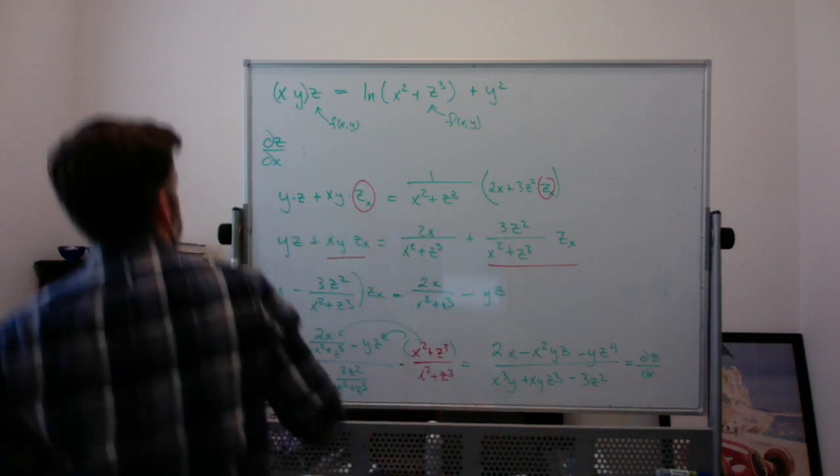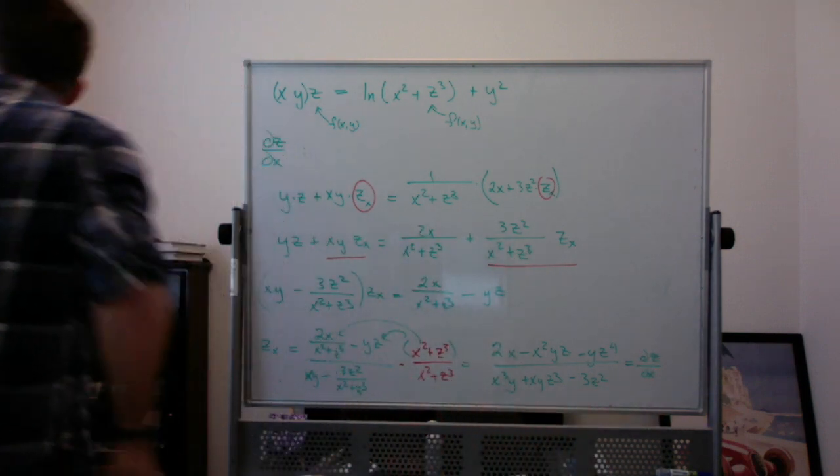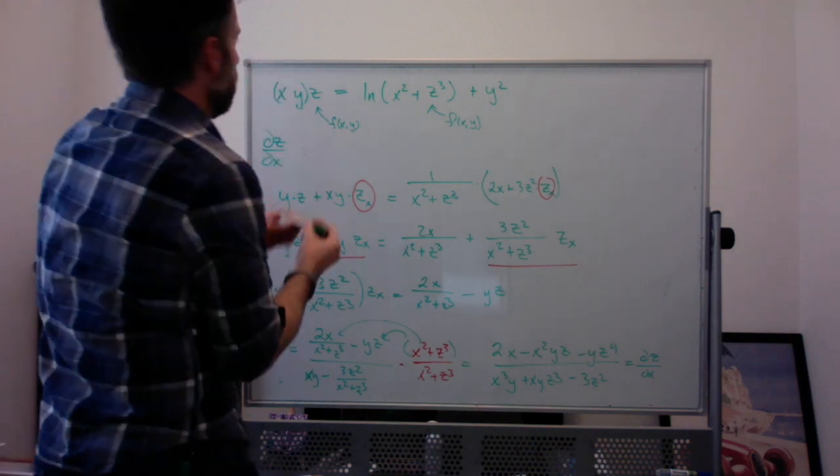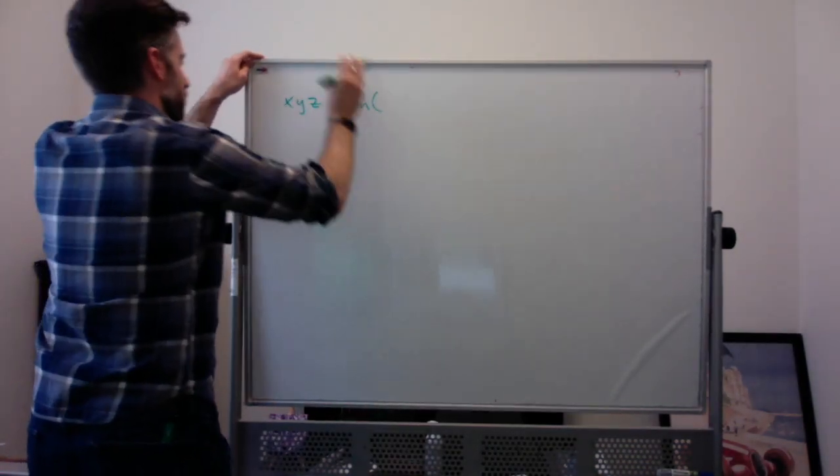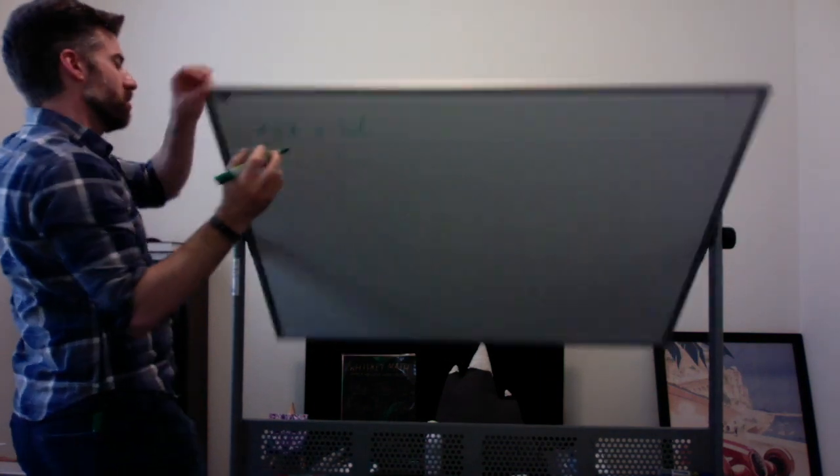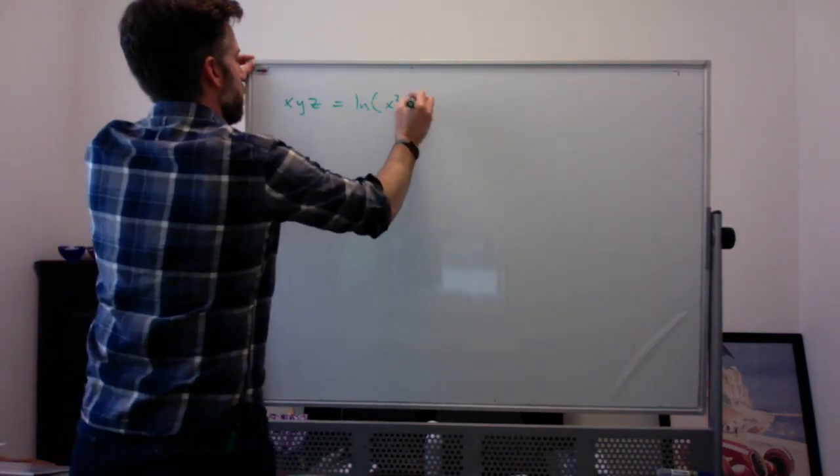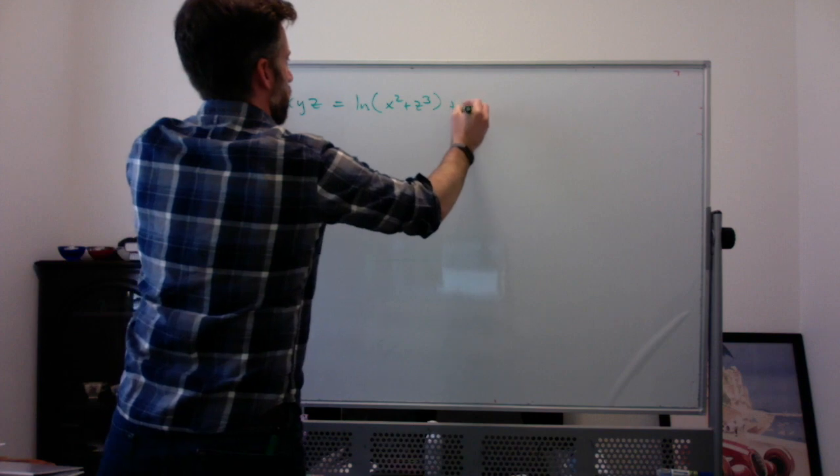To find ∂z/∂y, we're going to do the same sort of thing. So, got the same other function. I should have written it ahead and top of the back. It's xyz equal to the natural log of x² + z³ plus y².